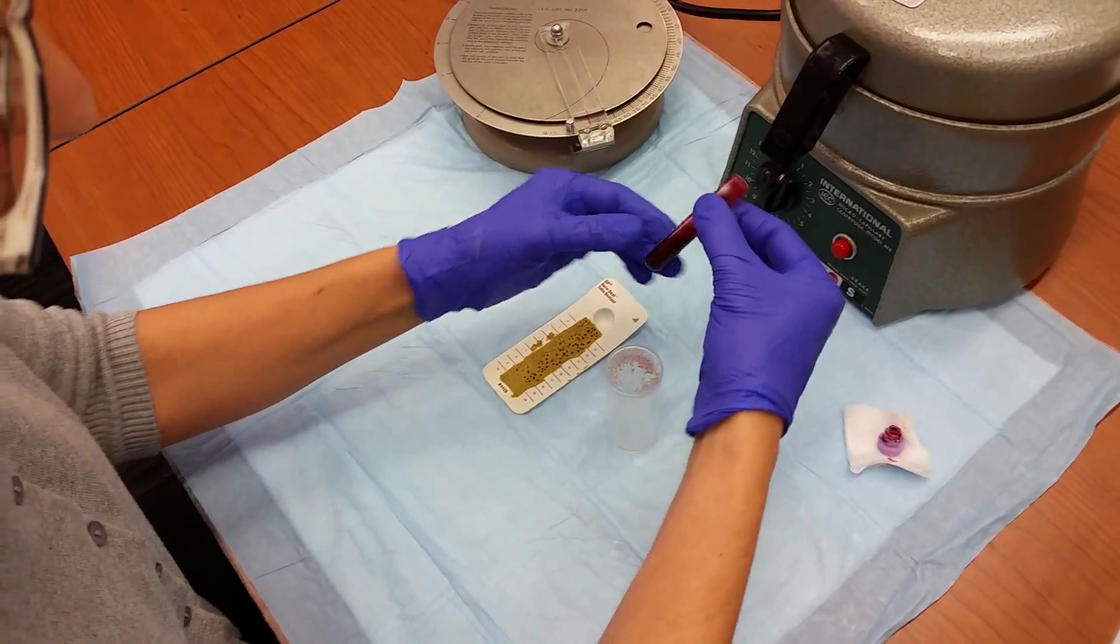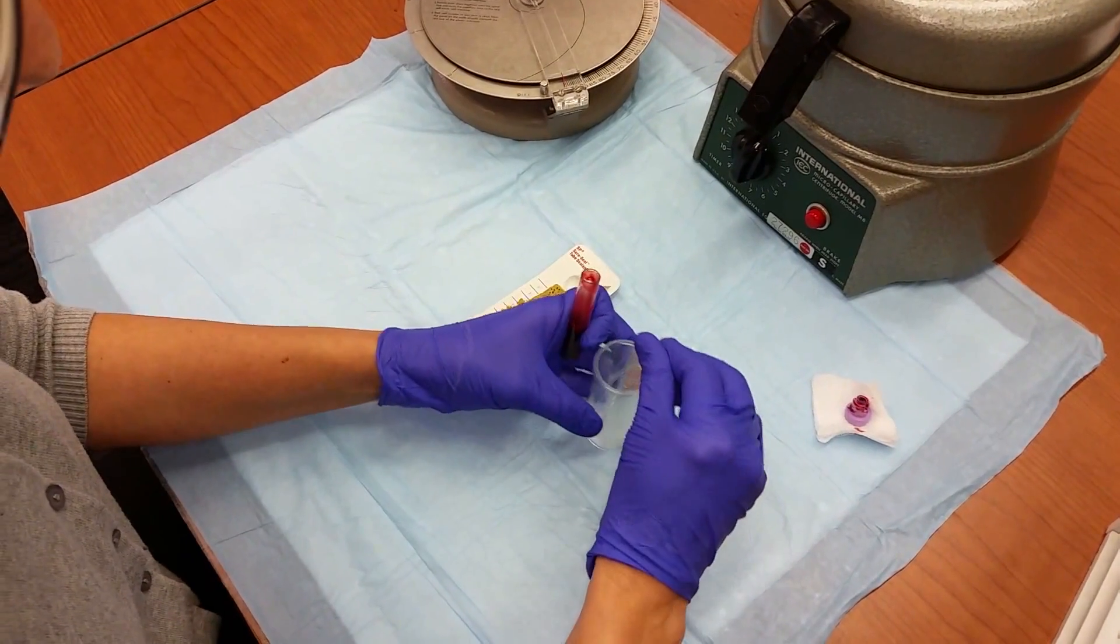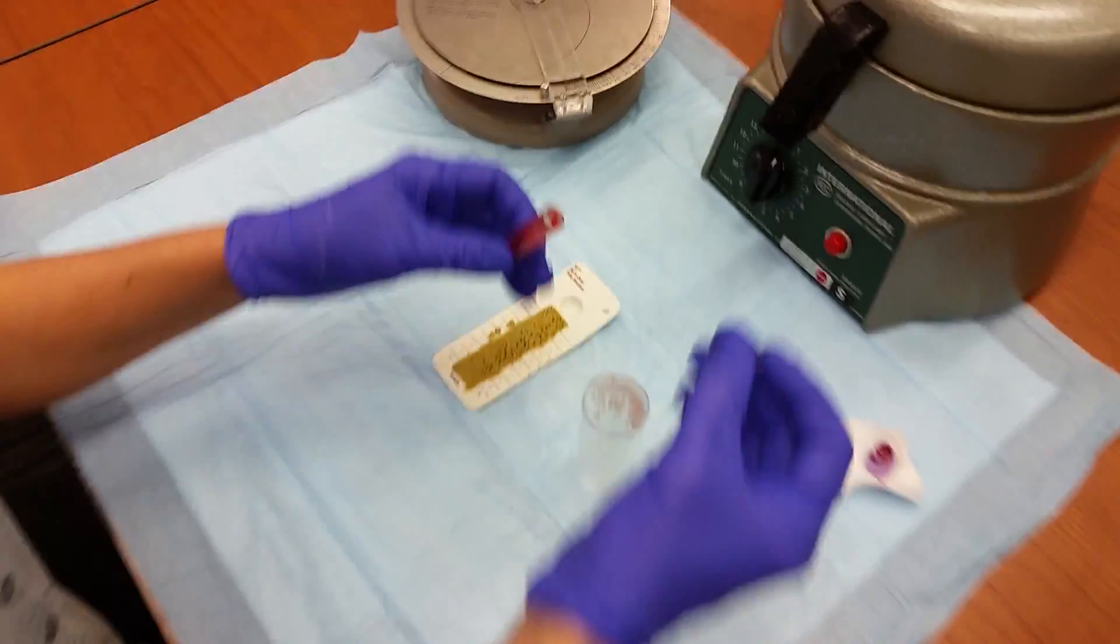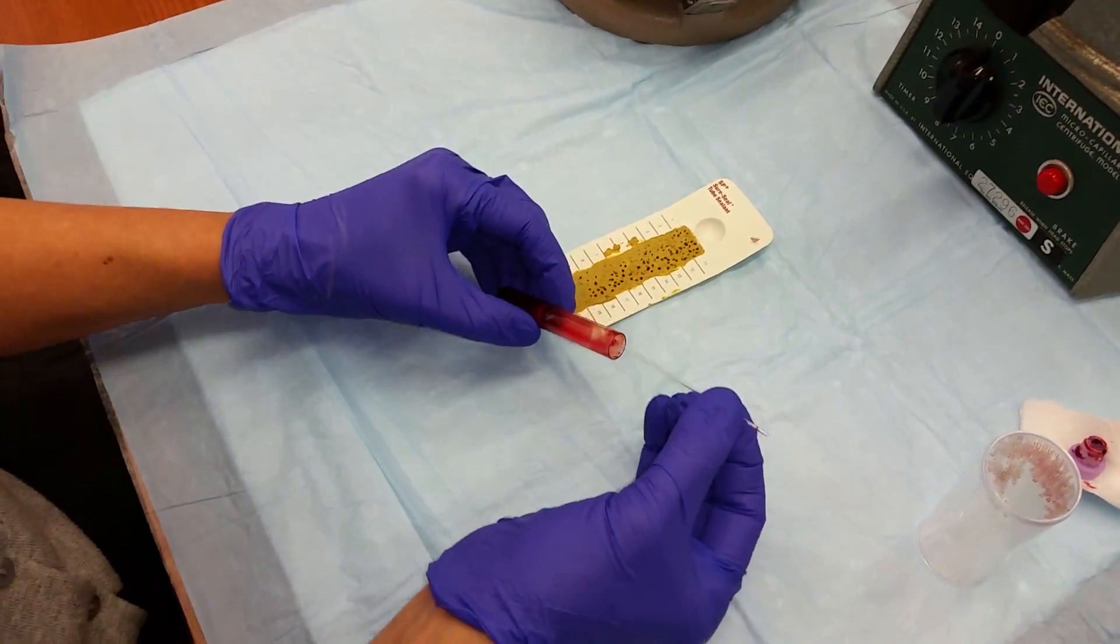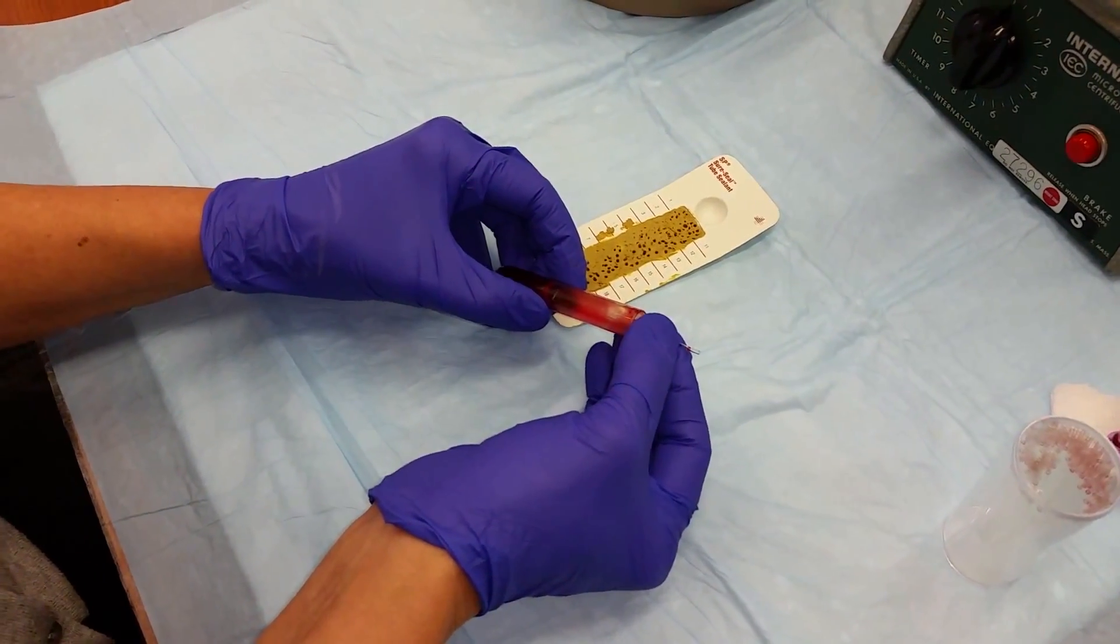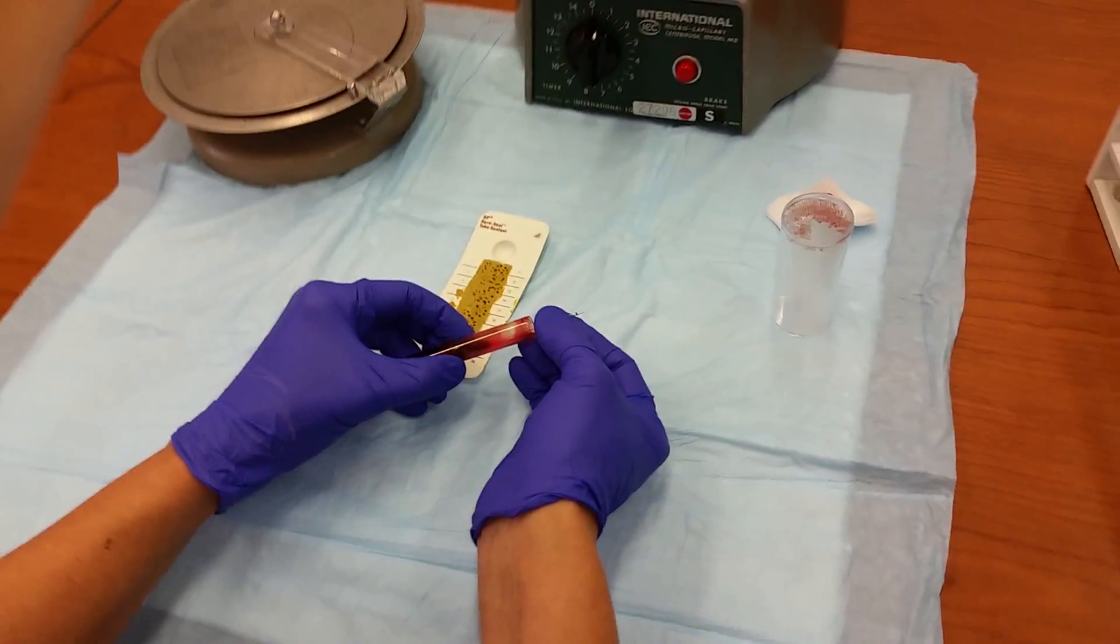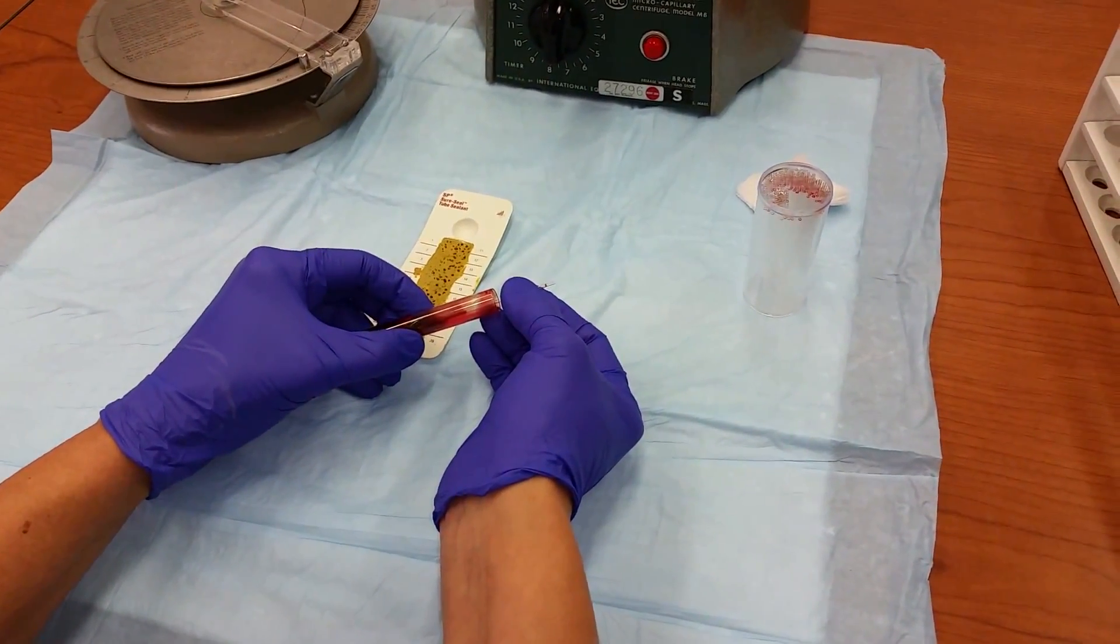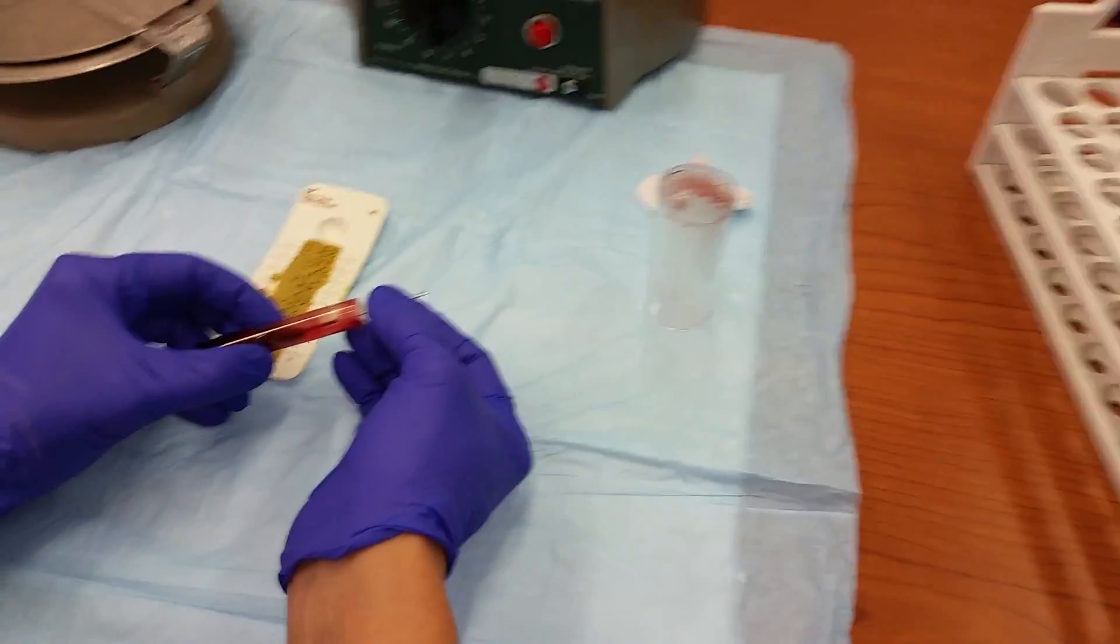You're going to take your tube of anticoagulated blood. Take one of the microcapillary tubes and place it inside the tube, holding the tube at an angle so that the blood will travel up the capillary tube by capillary action. It takes a few minutes. It's not necessary to have the blood go all the way up to the top of the tube, but you want it to at least pass the halfway point.